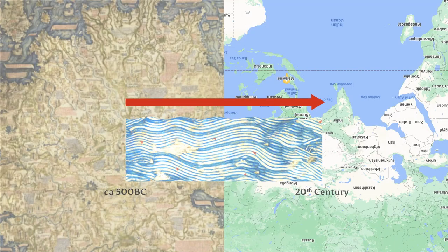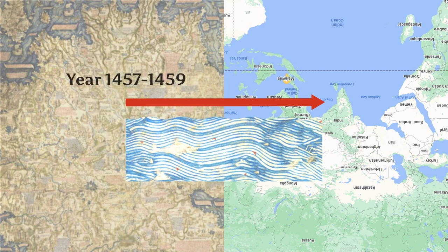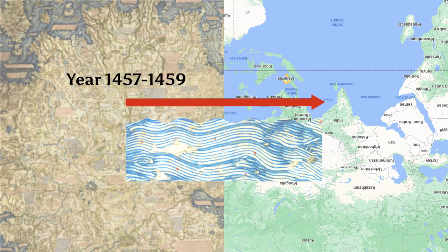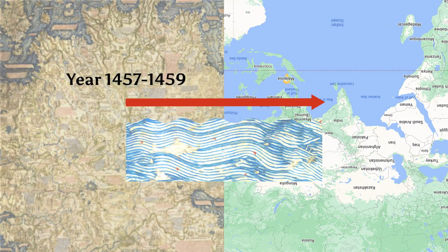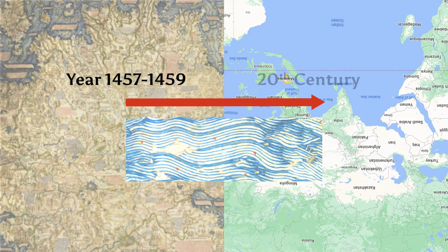For the map of Frau Moro, which was created between 1457 to 1459, we will assume that the climate of the time was generally the same as in the 20th century.